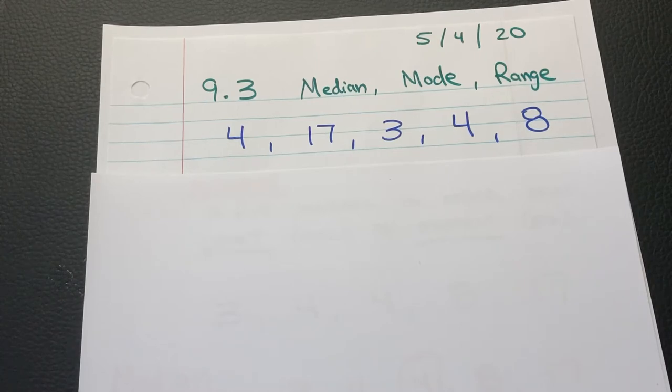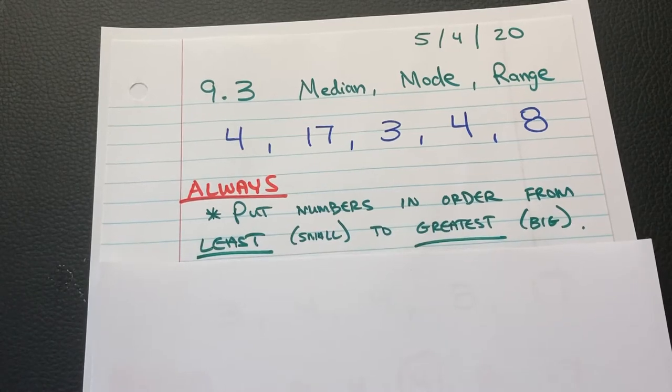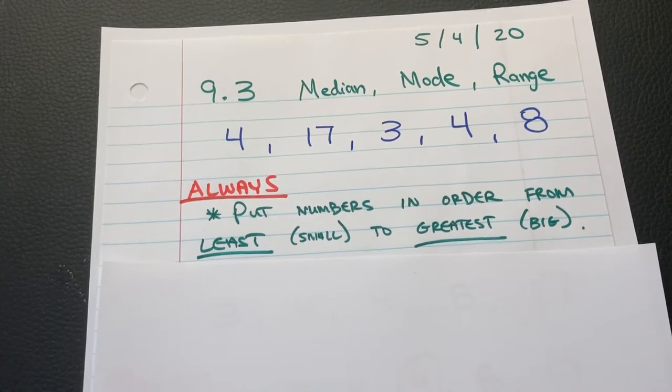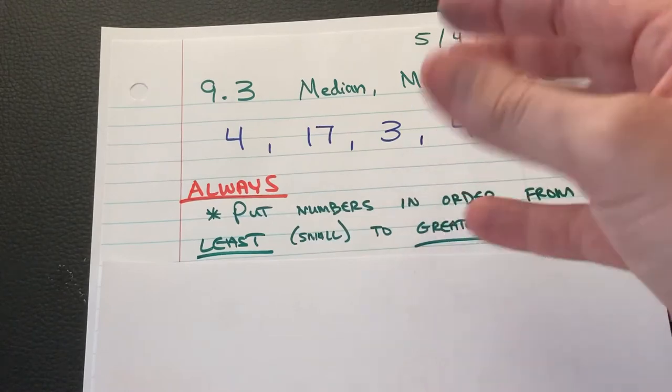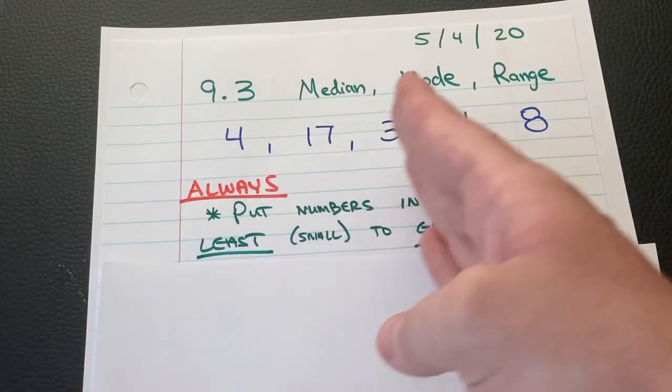They're not from greatest to least. You're always going to put the numbers in order from smallest to biggest, from least to greatest. So no matter in your Google Doc, in your worksheet, in your textbook, you're going to take these numbers, and you're going to shake them up and put them from smallest to biggest.